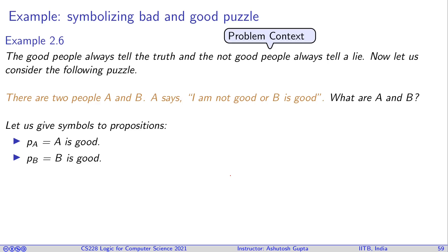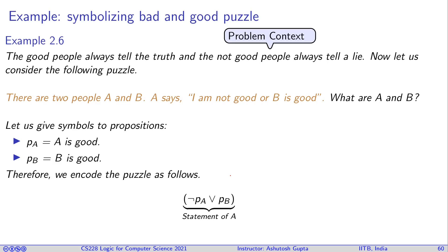To solve this problem, we first introduce variables for the propositions. We have proposition PA which represents 'A is good,' and proposition PB which represents 'B is good.' Now let's encode the puzzle. A is saying 'I am not good' — that is, not PA — or 'B is good,' which is PB. Since A is saying it, the truth value of the statement is equivalent to the truth value of A being good, so we write it equal to PA.